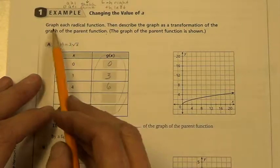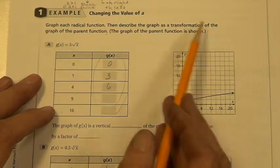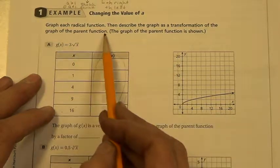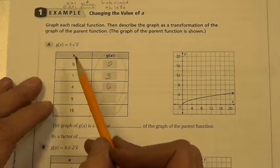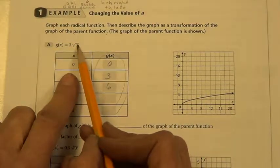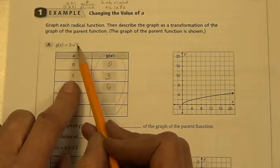Changing the a value. Graph each radical function, then describe the graph as transformation of the graph of the parent function. The graph of the parent function is shown. What we would do is plug these values in. They give us really nice ones. Square root of 0 is 0, times 3 is 0. Square root of 1 is 1, times 3 is 3.